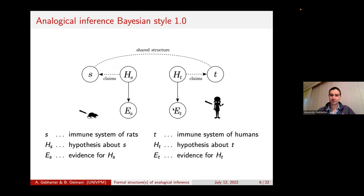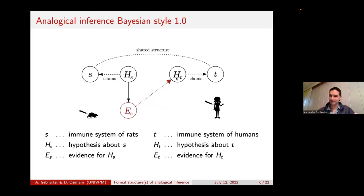The problem is that we cannot access ET directly at the beginning, for practical and moral reasons as mentioned before. But what we do have is evidence about the rat system. The task now is to answer the question: how can we use this evidence in order to confirm or disconfirm the hypothesis about the target system? The crucial part of the answer is that we need to establish a kind of shared structure between the two systems — that's what makes the inference run.